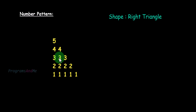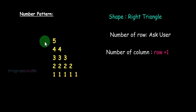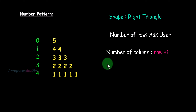The shape of this number pattern is a right triangle. Here the number of rows is 5 in this example, but in the program we will ask the user to enter the number of rows. For the number of columns we will use the formula row plus 1, because when the row number is 0 we want 1 column, when row number is 1 we need 2 columns, when row number is 2 we need 3 columns. That's why the number of columns is row plus 1.